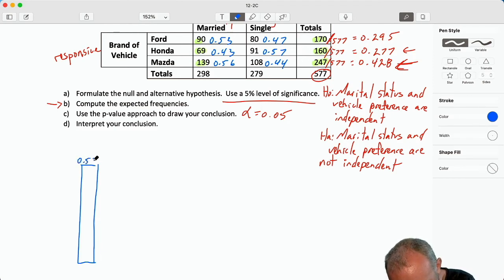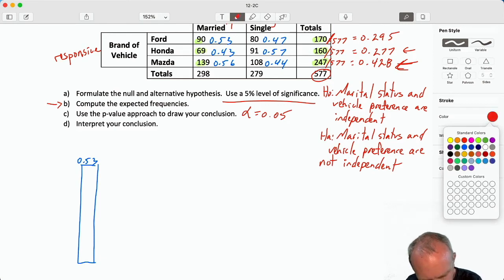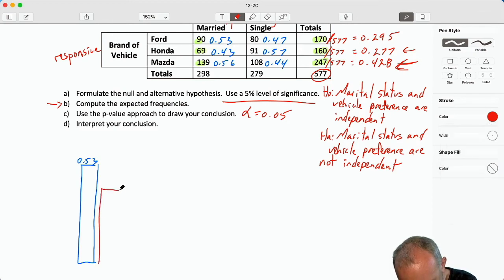And for the single folks, that was 0.47. So let's draw that, maybe somewhere here. It doesn't have to be to scale. And that is for the Fords.